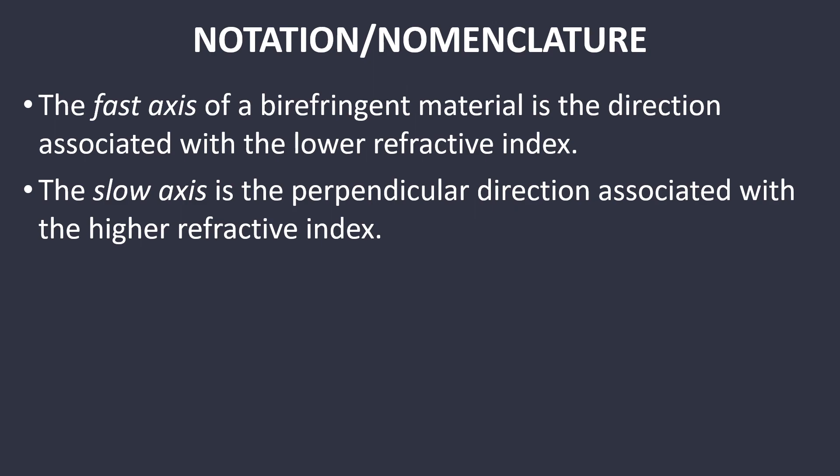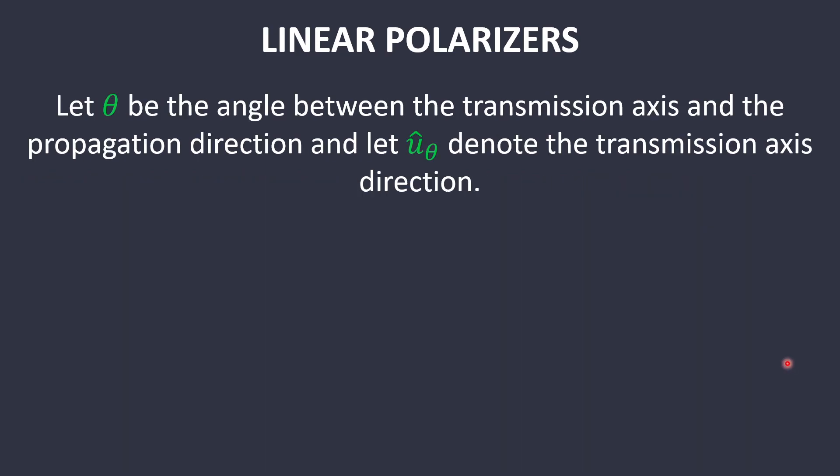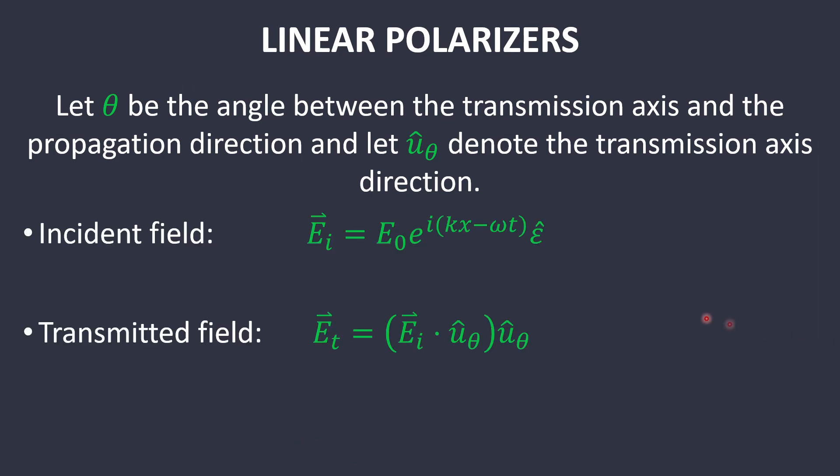Linear polarizers have preferred transmission directions, which are called transmission or polarization axes. These axes are usually oriented perpendicular to the wave propagation direction, and a linear polarizer transmits only the component of the electric field along the transmission axis. Let θ be the angle between the transmission axis and the propagation direction, and let u_θ denote the transmission axis direction. The transmitted field will be the amount of the electric field that is aligned with the transmission axis, which is represented with this dot product.